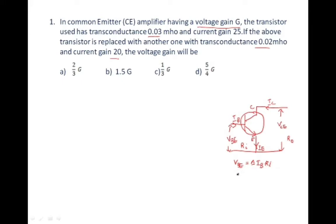For a common emitter transistor amplifier, the current gain beta is the ratio of output current to input current, which can be written as delta-ic divided by delta-ib.